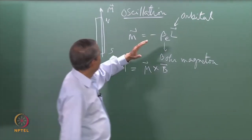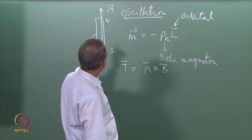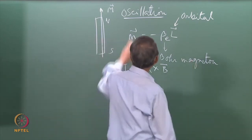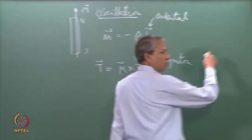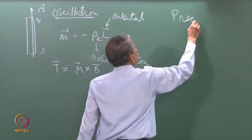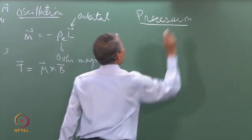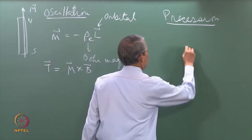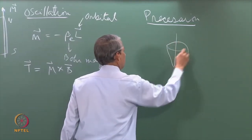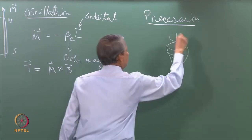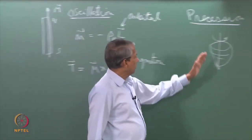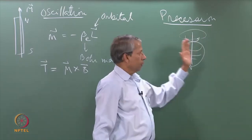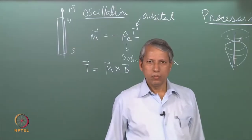Now, if a magnetic moment arises from its angular momentum, then what is going to happen? At that time it is not undergoing oscillation — it will undergo a special kind of motion which we call precession. What is precession? All of you must have noticed that when you play a top and it is rotating at high speed, you will notice that the axis of its rotation also keeps moving. That type of motion is called precession.